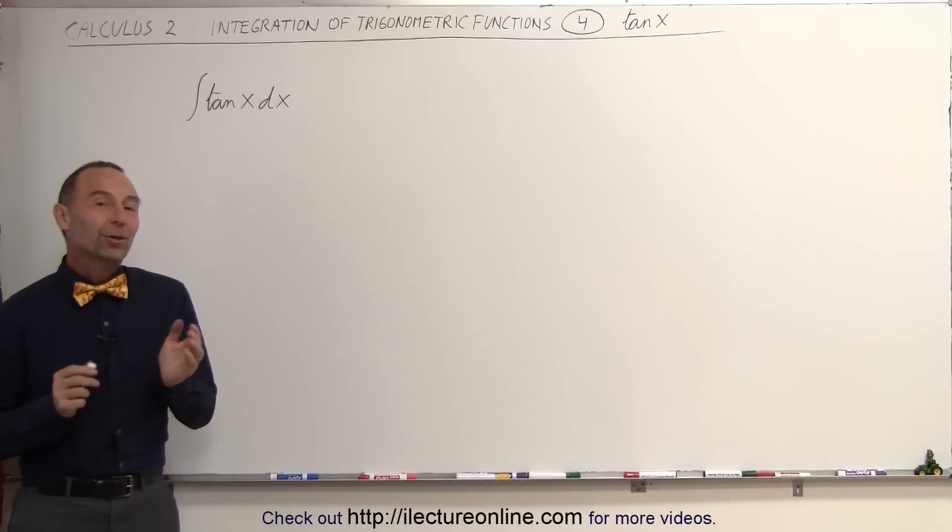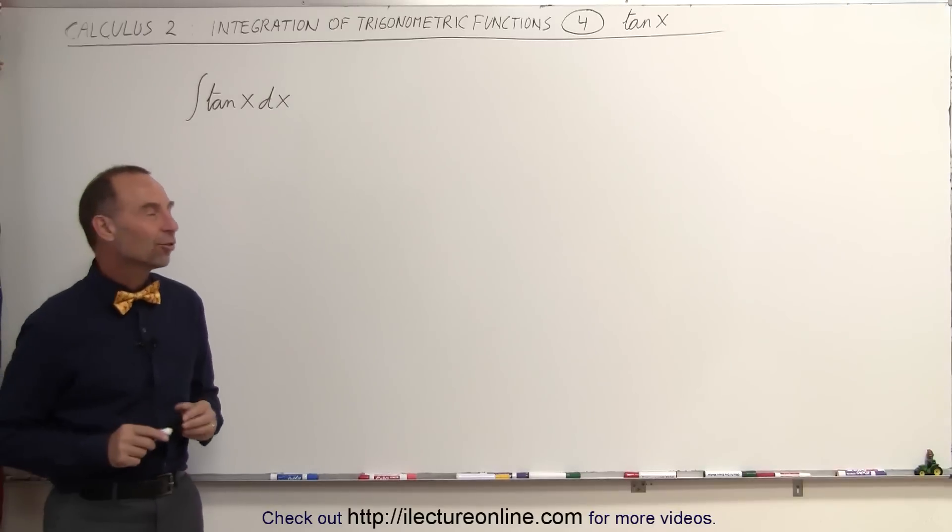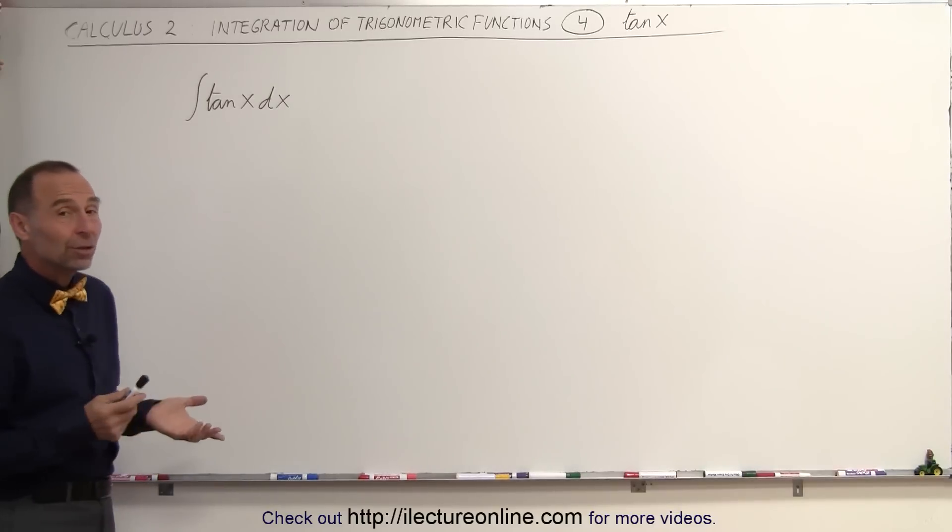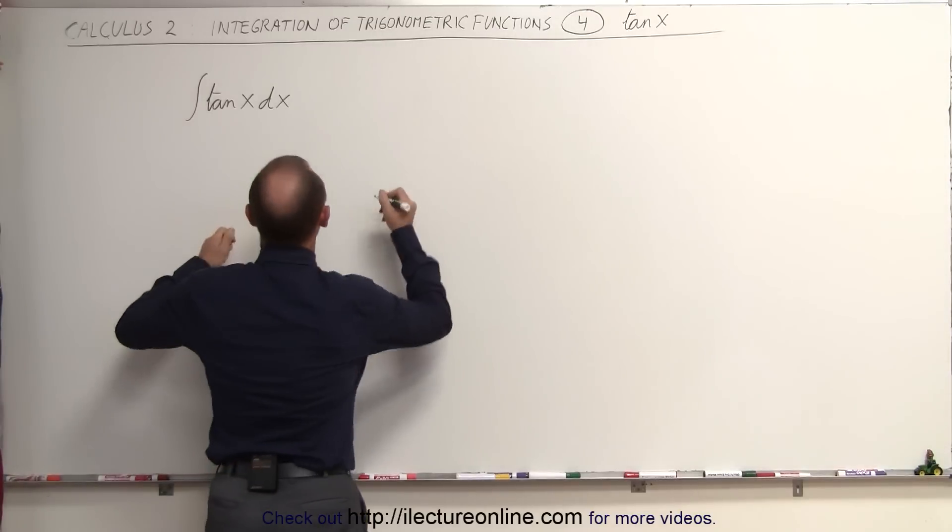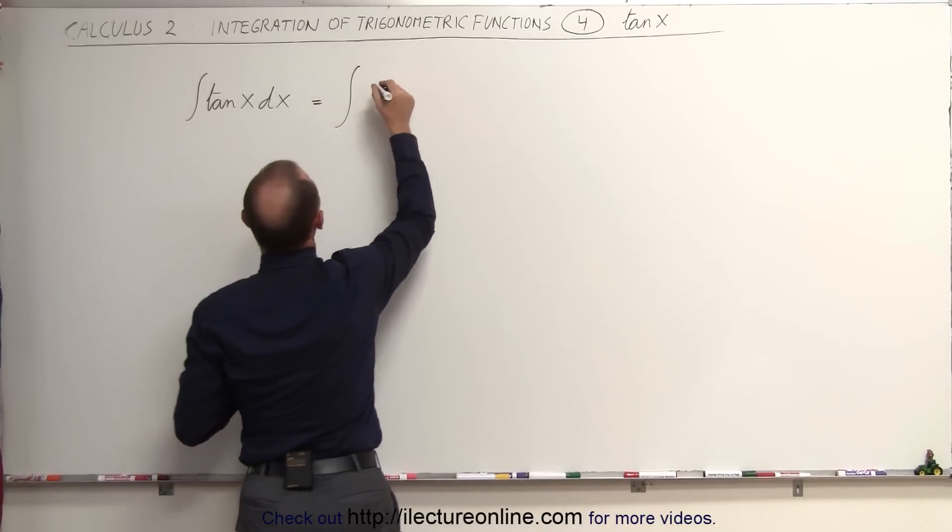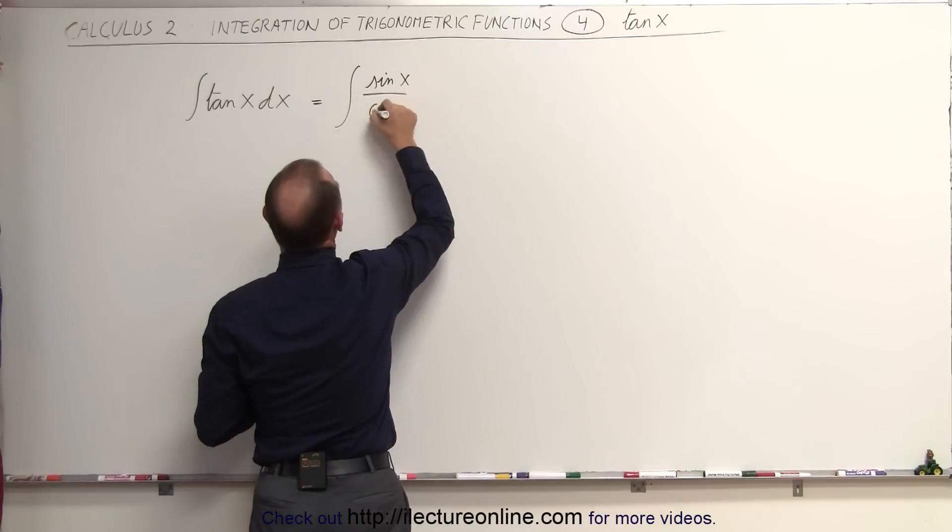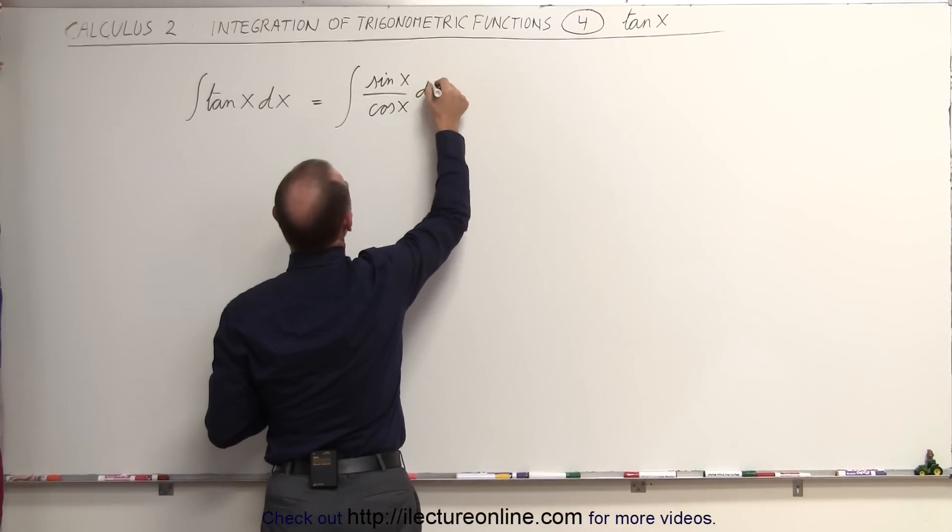Welcome to our lecture online. Now let's take a look and see how to integrate the tangent of x. The best way to do that is to change the tangent of x into what it's equal to. We can write this as the integral of the sine of x divided by the cosine of x times dx.